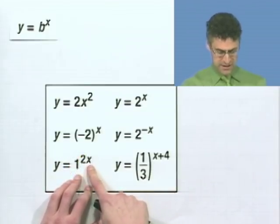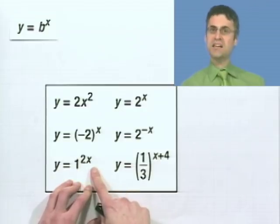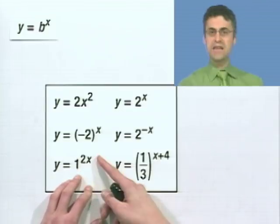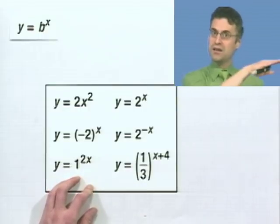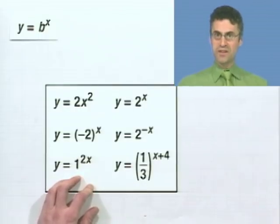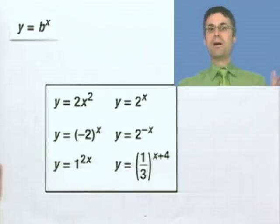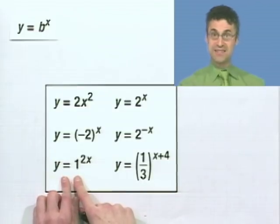In some sense, if you think about it, when you put in different values for x, this is just a constant function. Because 1 to any power is 1. So this is just y equals 1. So it's flatlined at 1. So not an exponential function. We want things growing or falling. We want drama. And this is not dramatic. This is constant.